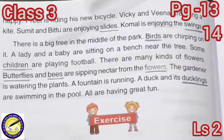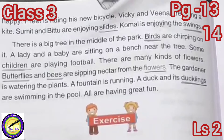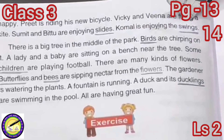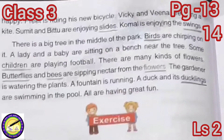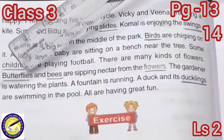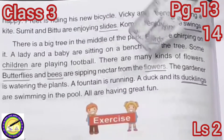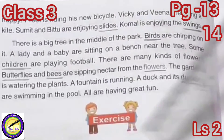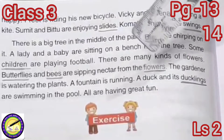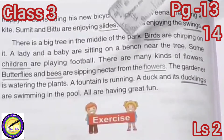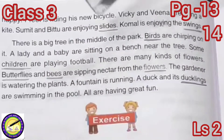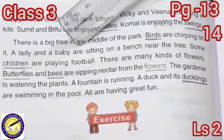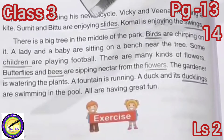Children, let us read the underlined words again: slides, swings, birds, children, butterflies, bees, flowers, ducklings. All the underlined words are given in plural form. Plural means more than one in number. So let us have a look at the singular and plural form of these words.